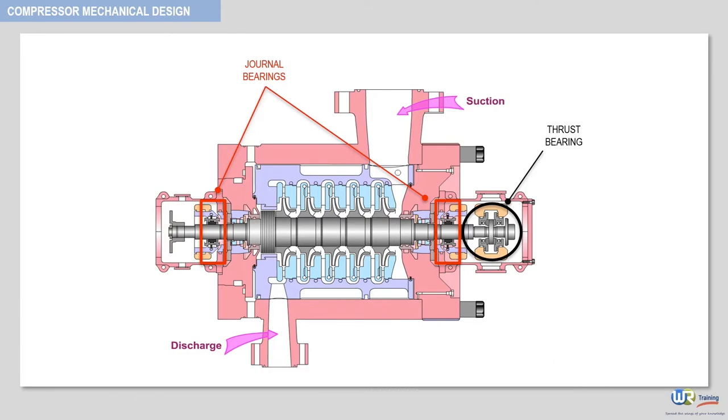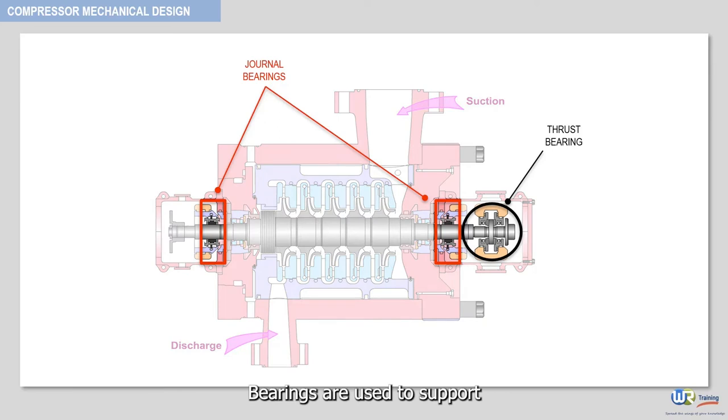Bearings are used to support the compressor shaft with the minimum of friction. Bearings allow the shaft to rotate about its axis while restricting axial and radial motions of the shaft.